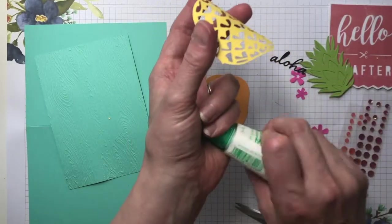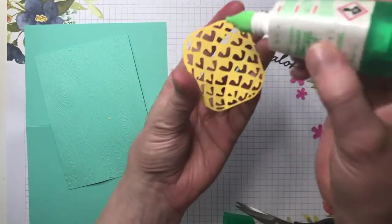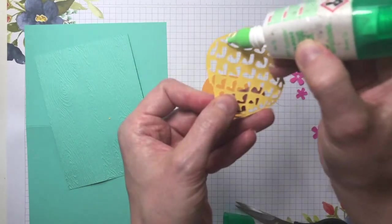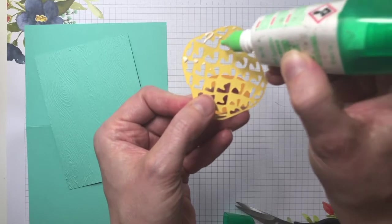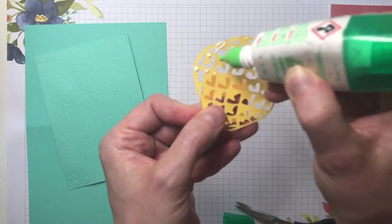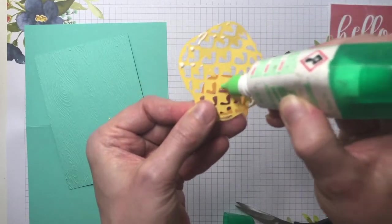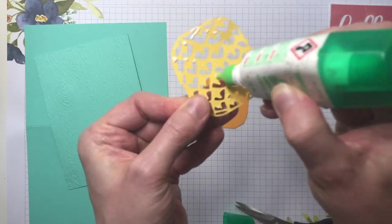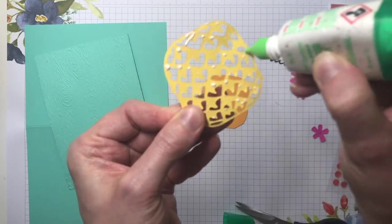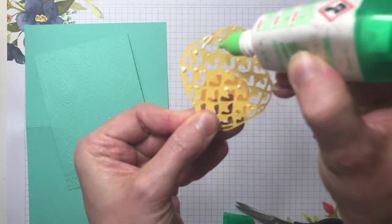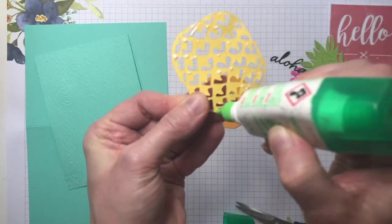So with your Tombow glue, the fine tip end works best. Just carefully dab some very small dots of glue onto that pineapple. The smaller the dots the better actually, and then it doesn't spread out too much.